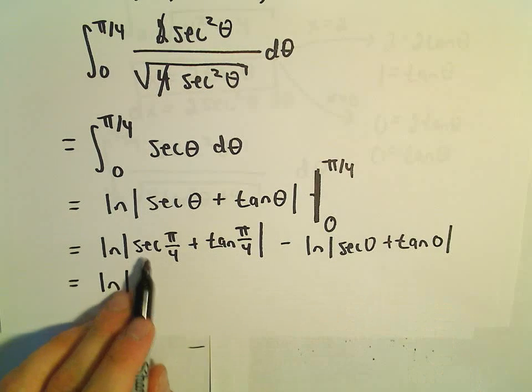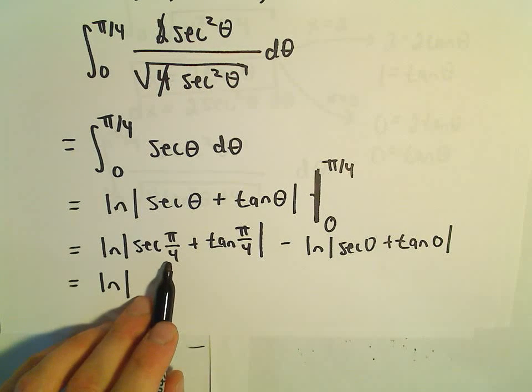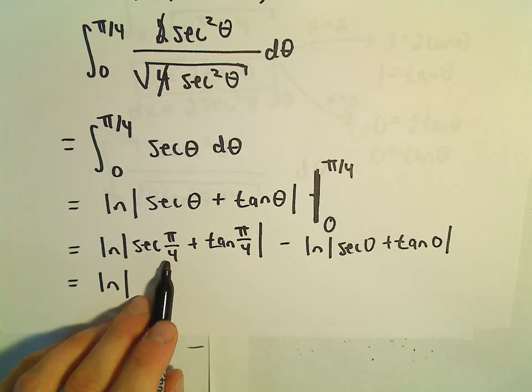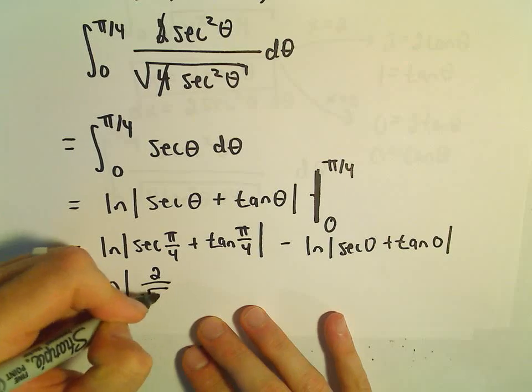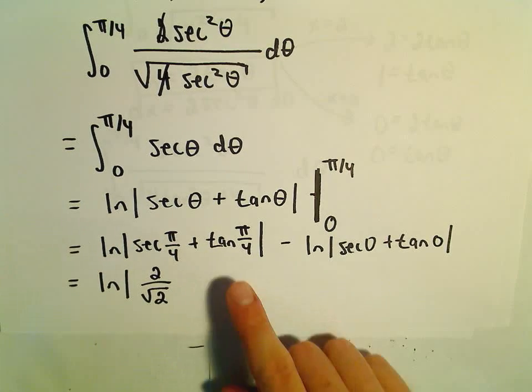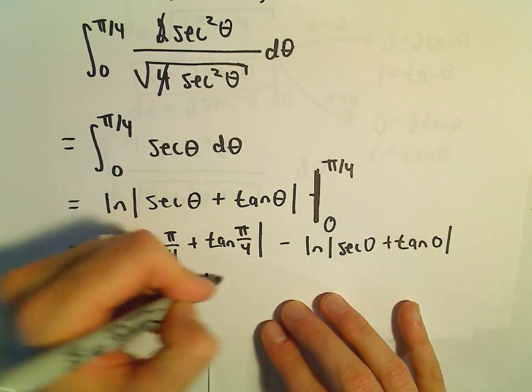Sec(π/4) is 1/cos(π/4), which is 1/(√2/2) = 2/√2. Tan(π/4) is 1.